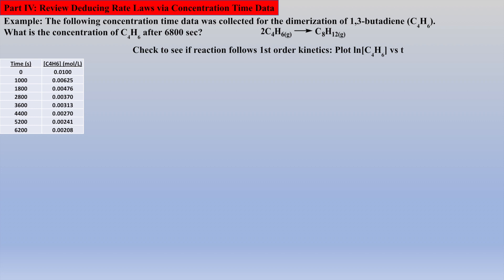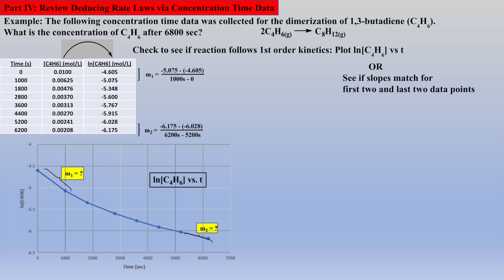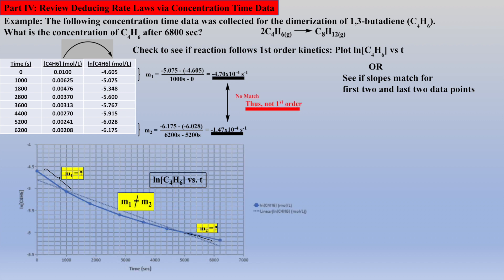So now, let's check if the reaction follows first-order kinetics by plotting the natural logs of the concentrations of A versus time, which will require the natural logs of all the concentrations. The data is not linear, thus first-order kinetics can be eliminated. Alternatively, and much quicker, we could check to see if the slopes of the first two and last two data points match, which again is the definition of a straight line. The two slope calculations do not match, thus first-order kinetics can be eliminated.